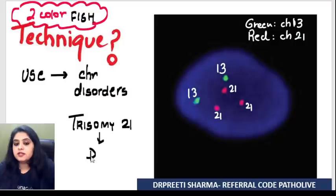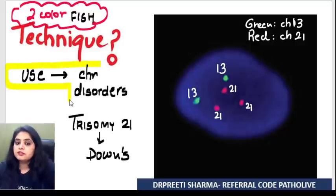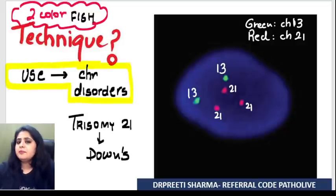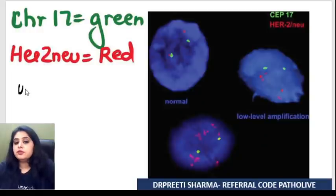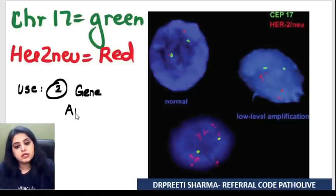Chromosome 13 is showing two signals, chromosome 21 is showing three signals. Should we call this a case of Down's — trisomy 21? Exactly. This is a case of trisomy 21, that is Down's. So FISH is helping me detect chromosomal disorders.